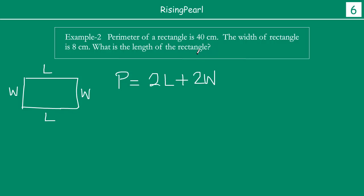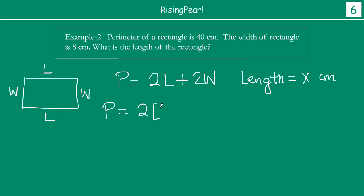So again, let us see how we write this as a linear equation and solve it. We assume that the length is equal to x centimeters. Now, like a detective, we are going to put all the information we have available and write our equation. Length is x and width is 8, so the perimeter is equal to 2 times x plus 2 times 8. This perimeter is actually equal to 40.